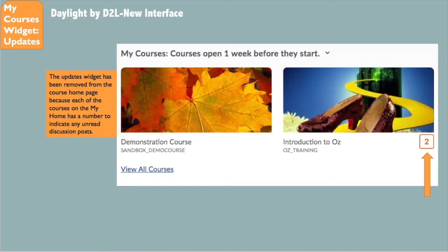The Updates widget was removed because the My Courses widget has now absorbed that functionality. You can see the orange arrow pointing to the number 2 under the Introduction to Oz course, indicating that there are two unread discussion posts — which is what the Updates widget was used to notify students for. This is on the My Courses widget on your My Home page.